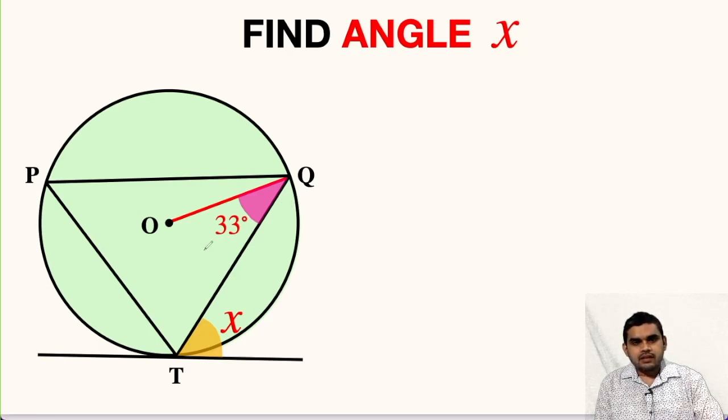In this question, we have a circle whose center is at point O and there is a line, let us name it as L, and this line is tangent at point T to this circle. Also, this angle is given as 33 degrees and we have to find the value of this angle x.